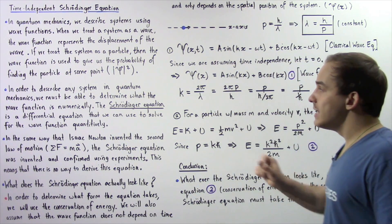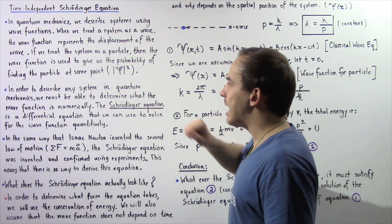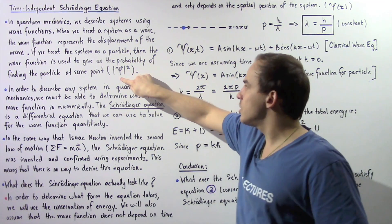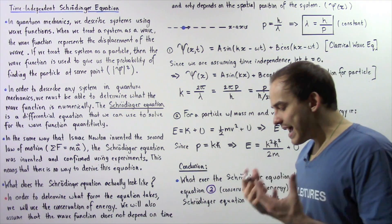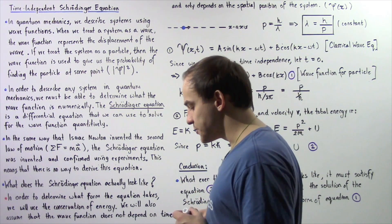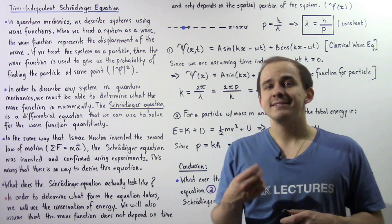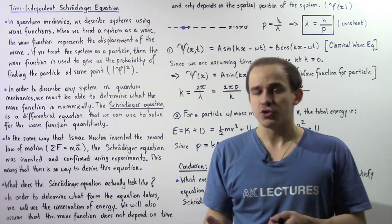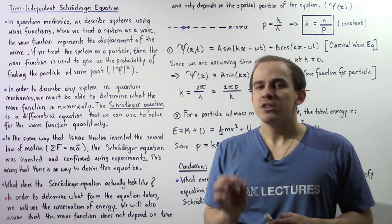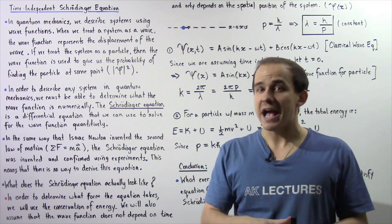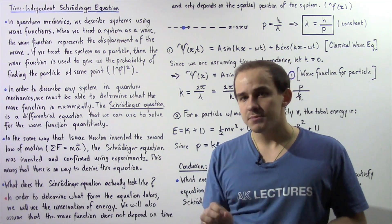More specifically, to calculate the probability, we take the square of the absolute value of the wave function, which is given by the Greek letter psi. In order to describe any system such as our electron in quantum mechanics, we must be able to determine the wave function numerically. And that's exactly where the Schrödinger equation comes into play.